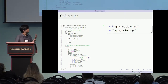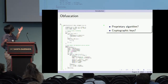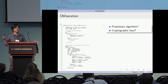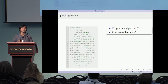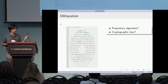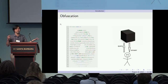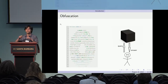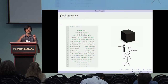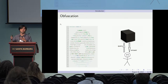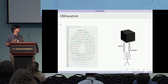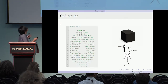An obfuscation scheme will do something like the following: take this code and return code that is guaranteed so that you can only treat it as a black box. We want the user to only get input/output query access to the code. If any algorithm does a partial evaluation or tries to read some bits of memory, this should give you randomness you could otherwise simulate without seeing the code itself.